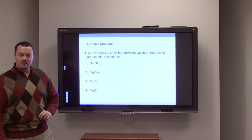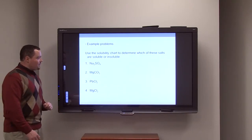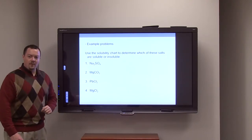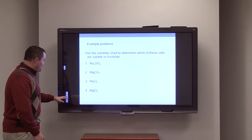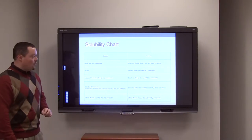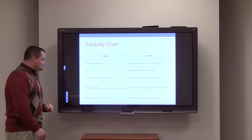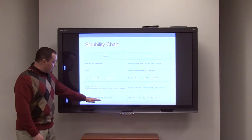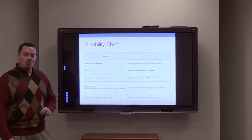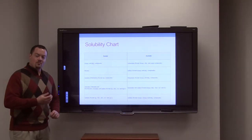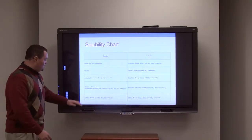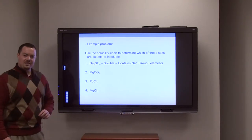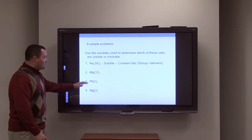Now how do we use this solubility chart to determine if a salt is soluble or insoluble? Let's look at four examples. The first one is sodium sulfate — is sodium sulfate soluble in water? Going back to our solubility chart, it tells us sulfates are soluble except when bound to silver, lead, barium, strontium, or calcium. Therefore, sodium sulfate should be soluble because it fits into our soluble column — it contains sodium and sulfate.